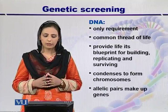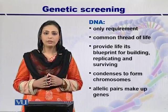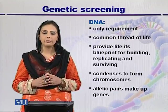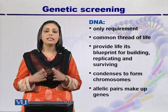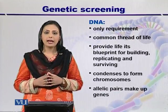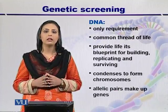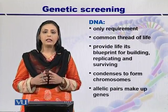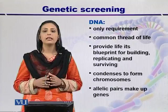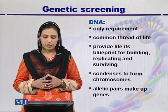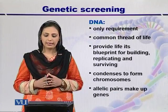The structure of DNA consists of nucleotide base pairs, a phosphate group, and deoxyribose sugar. DNA condenses to form chromosomes, and each chromosome has more than 100 genes. In a human being, there are 23 pairs of chromosomes, totaling 46. Allelic pairs make up the gene, which is the unit of heredity.